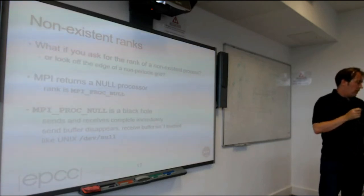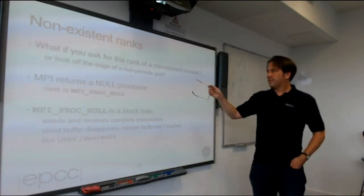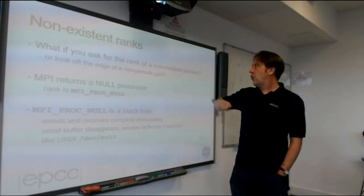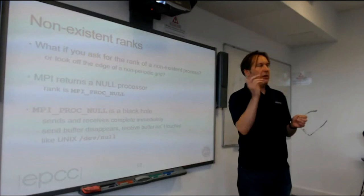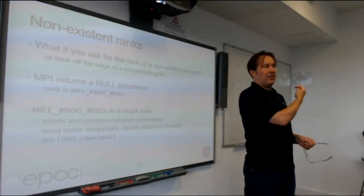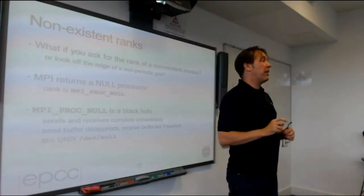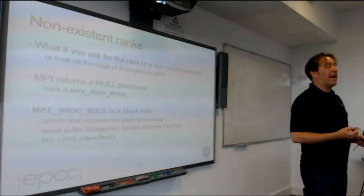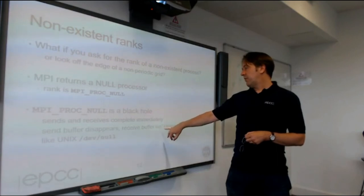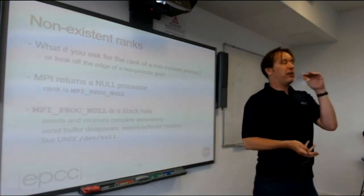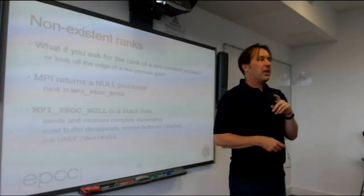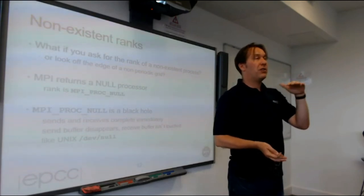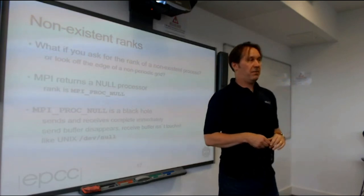What happens if you ask for the rank of a non-existent processor — looking off the edge of a non-periodic grid? MPI_Cart_shift returns a special value called MPI_PROC_NULL. This is like a black hole: all sends and receives to MPI_PROC_NULL complete immediately. The send buffer disappears, the receive buffer isn't touched. This is nice because it means you don't have to write special code for the boundaries. You don't have to say 'if I'm on the top edge, don't send a message upward' — you just send, and the message disappears. This allows you to write much more elegant code.